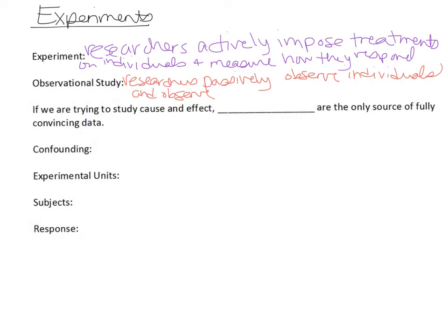One very important point for this class: the only way we can establish a cause-and-effect relationship is by looking at experiments. A high correlation doesn't necessarily mean there is a cause-and-effect relationship. The only time we can conclude cause and effect is if we look at a controlled experiment.